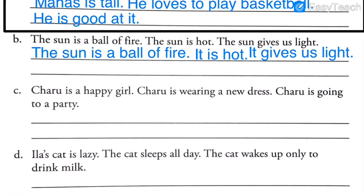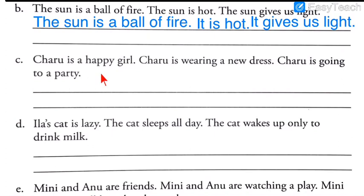This is how we have to do all the sentences. I hope students who are solving in their textbook and rough book are also writing the answers. Sentence C: 'Charu is a happy girl. Charu is wearing a new dress. Charu is going to a party.' The noun Charu is repeated three times here.